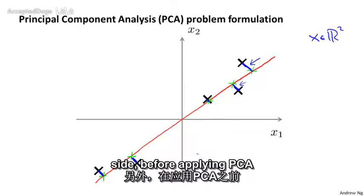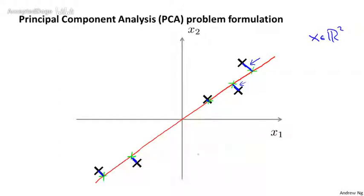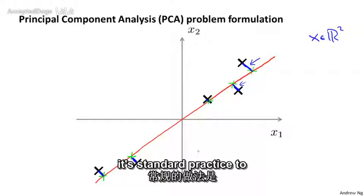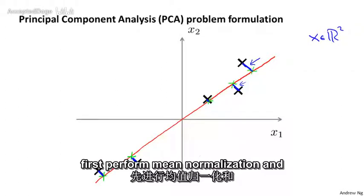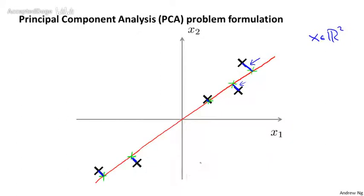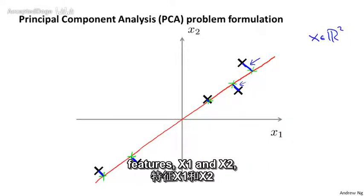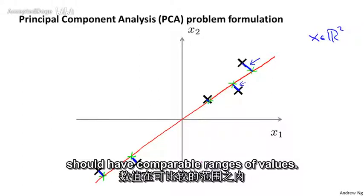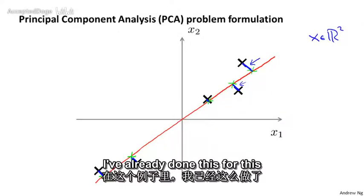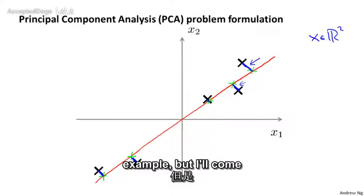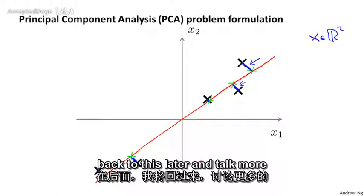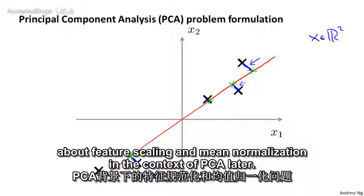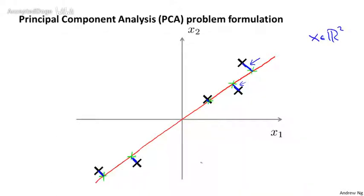As an aside, before applying PCA, it's standard practice to first perform mean normalization and feature scaling, so that the features x1 and x2 have zero mean and have comparable ranges of values. I've already done this for this example, but I'll come back to this later and talk more about feature scaling and mean normalization in the context of PCA.